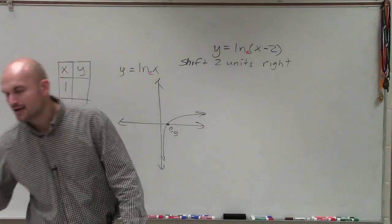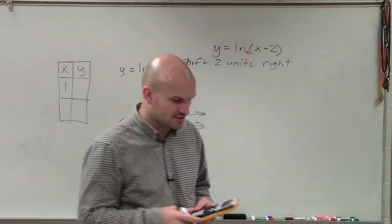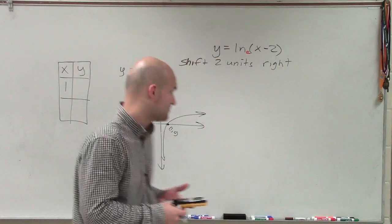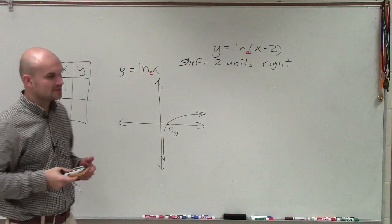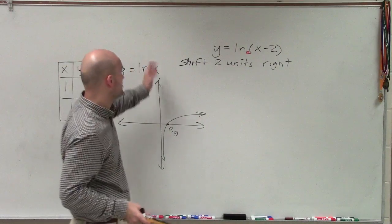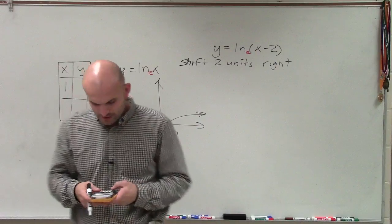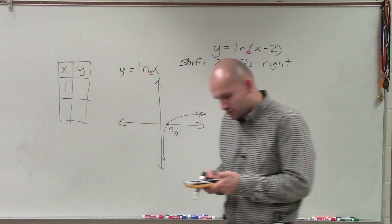And then usually what I like to do is just pick another point, 2 or 3 or something, just to see where the graph is going. So since I don't have any other dilations, nothing's being multiplied by my ln of x, I'm going to just take ln of x and create a table with it.